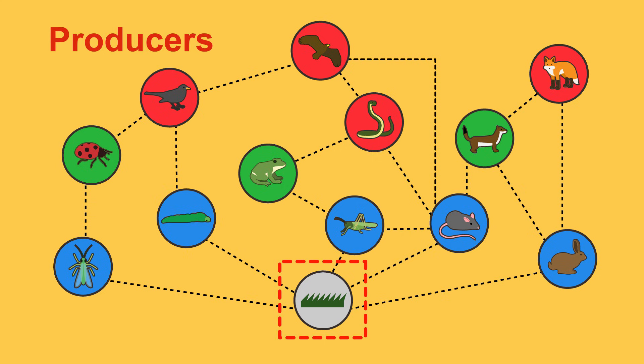Producers are autotrophs. This means that they are able to manufacture their own food just like how plants do this by photosynthesis.